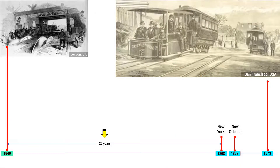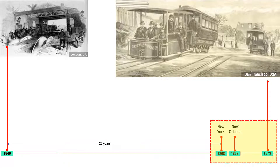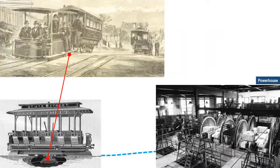28 years after the first Wagon Way was installed, New York, New Orleans, and San Francisco followed with their own improved versions of Wagon Ways. During these times, the car was not yet invented, so Wagon Way continued to be the name. In the San Francisco Wagon Way, a trench was built underneath the road where the cable would be placed. A clamp attached below the train would clamp on the moving cable to travel, and unclamp to stop and de-board passengers.